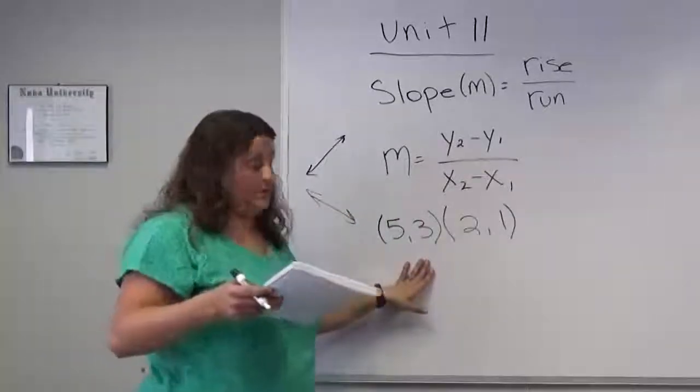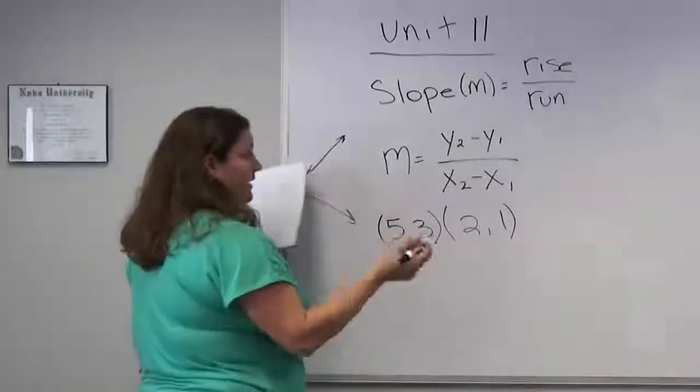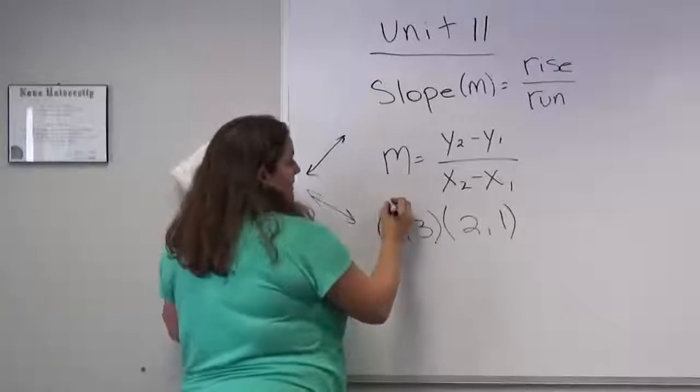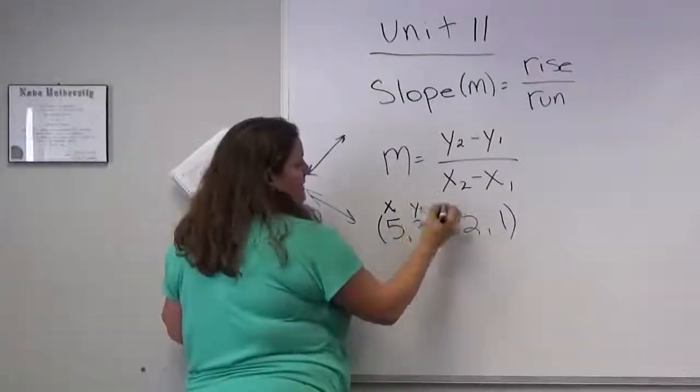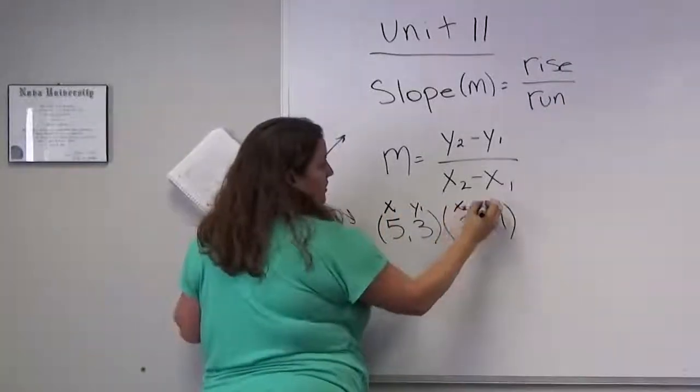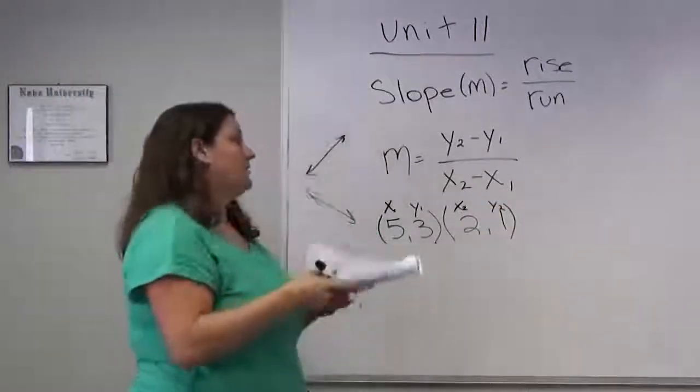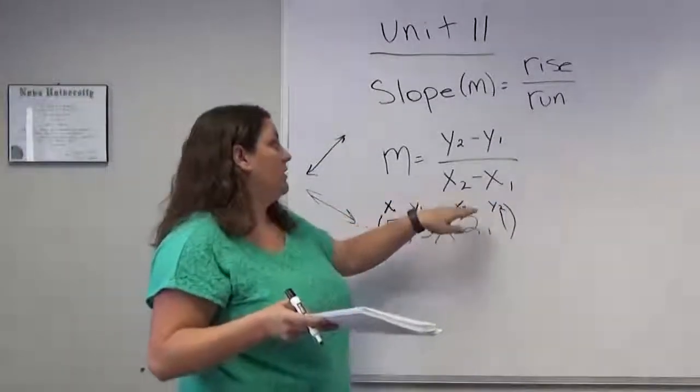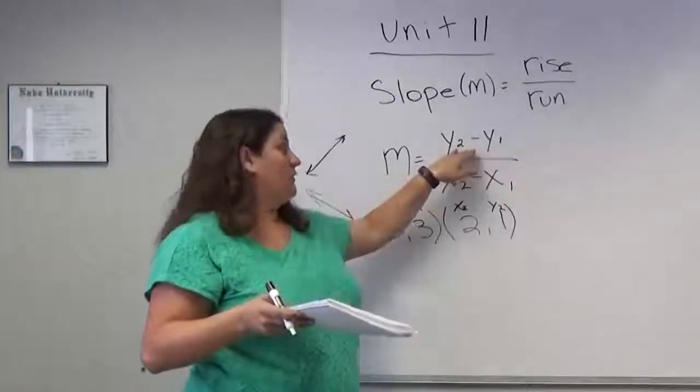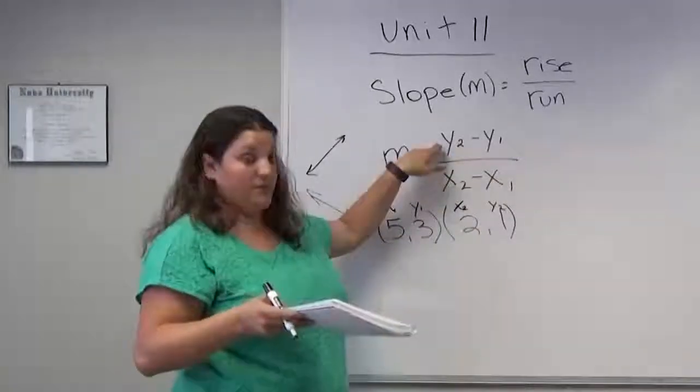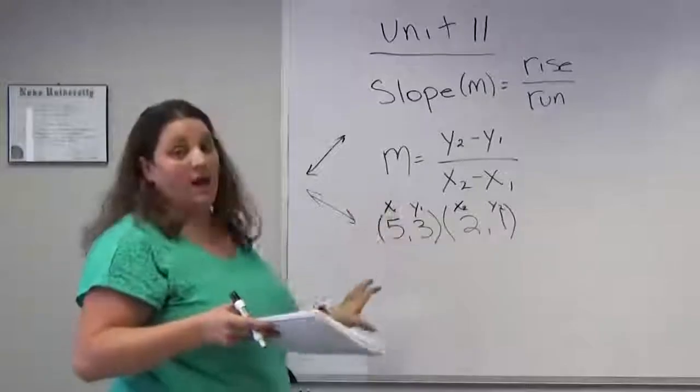So if you're given a set of ordered pairs, you can find the slope by just plugging it into this equation. It doesn't matter which you do, the x1 or the x2 first, as long as if you do the x2 first, you do the y2 first here. If you do the x1 first, you do the y1 first here. As long as you're consistent, you can do it in either order.